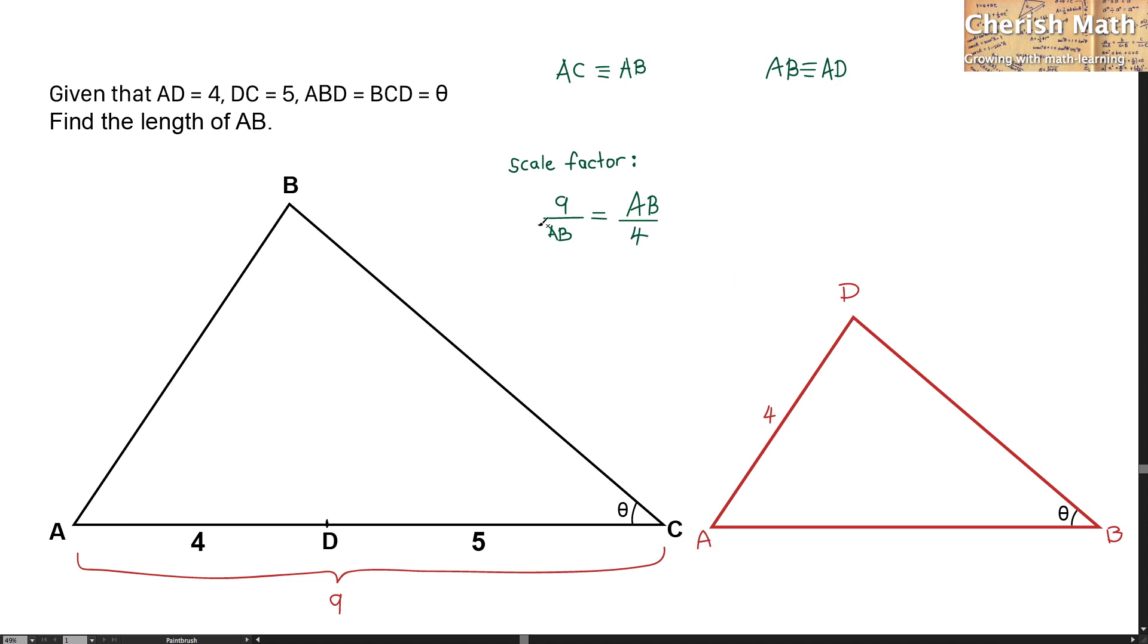And it applies as well for the length of AB of the black triangle divided by AD of the red triangle. And to find AB, I have to cross-multiply this equation that gives AB squared equal 9 times 4, which is 36.